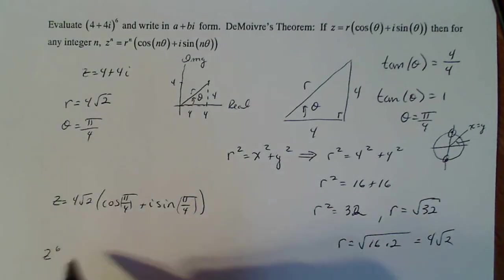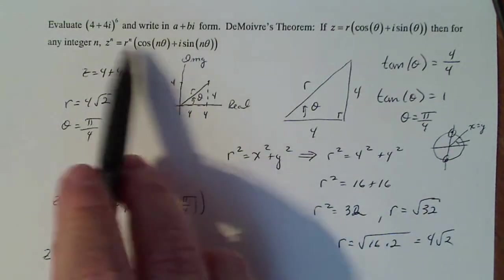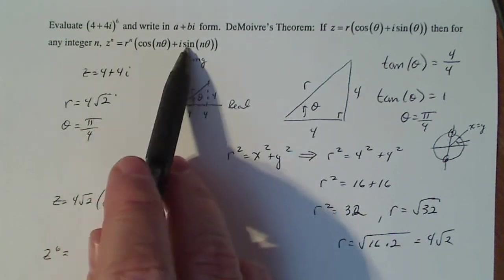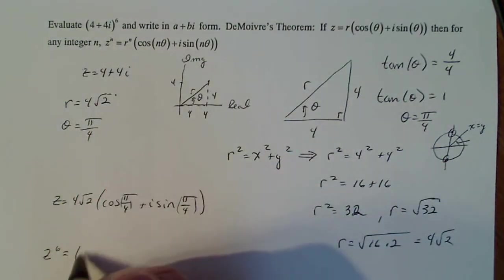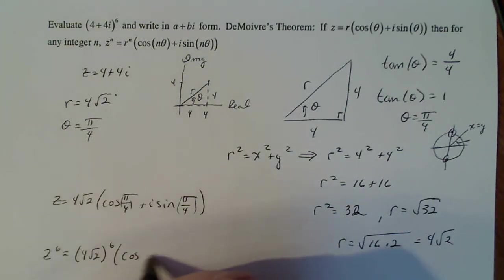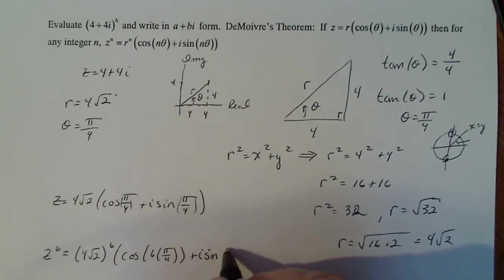That's what our goal is. So this is going to be equal to, if I use this formula now, all the n's become sixes. So I have 4 square root of 2 to the sixth times cosine of 6 times pi over 4, see that changes things, plus i sine 6 times pi over 4.